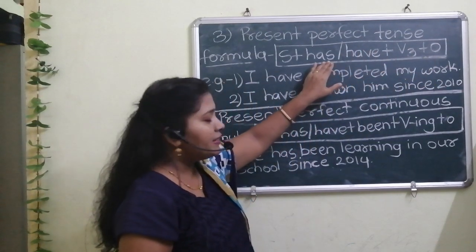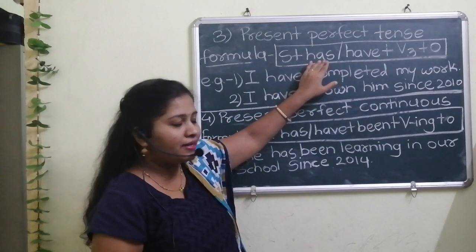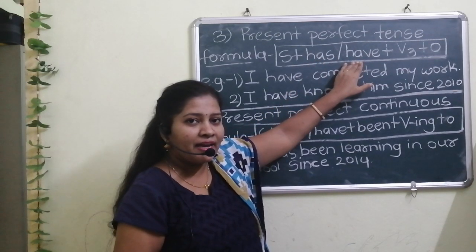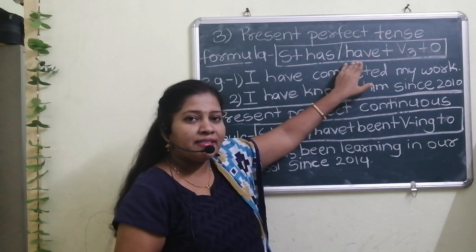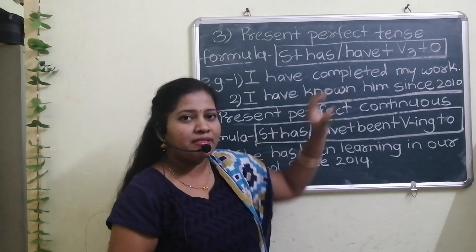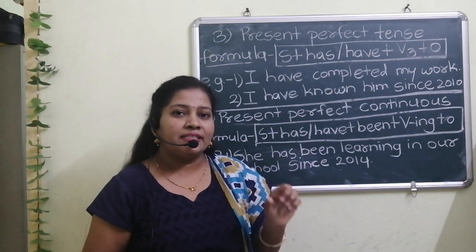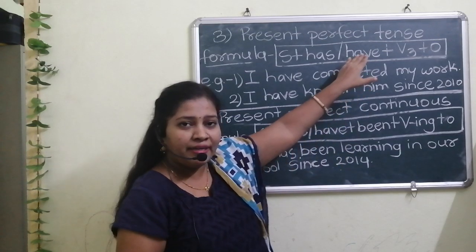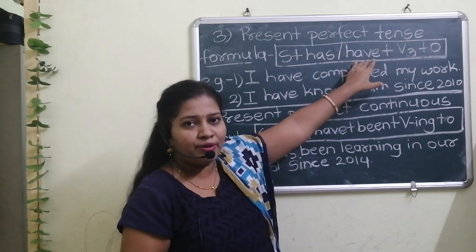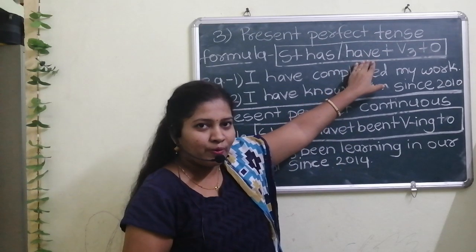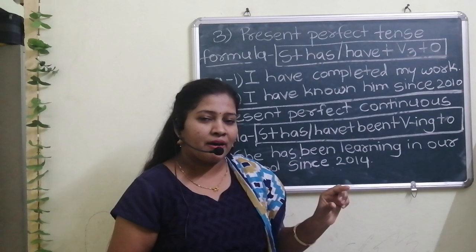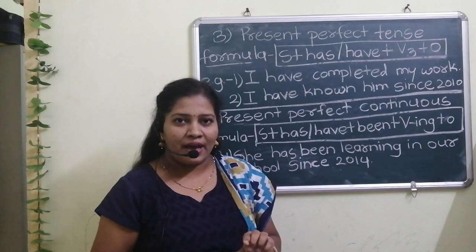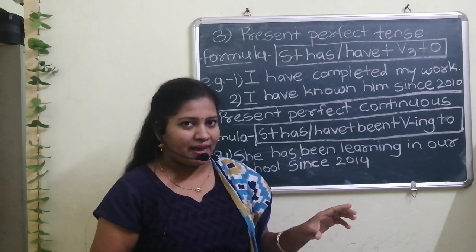Here two auxiliaries or two helping verbs are used: has and have. When the subject is third person singular — he, she, it — we use has. For the remaining personal pronouns, we use have. So we have to keep in mind when to use have and when to use has.